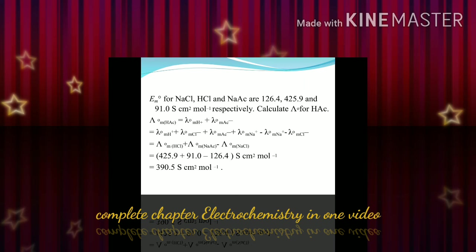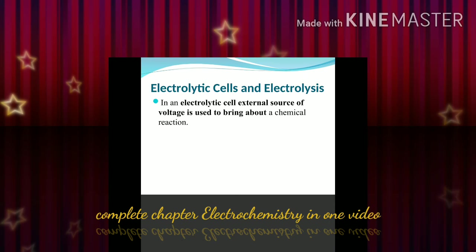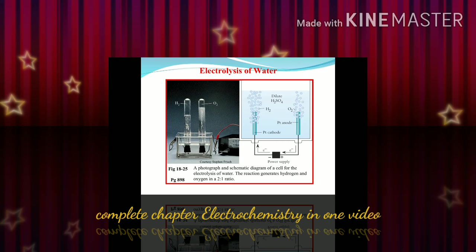An example has been given for NaCl, HCl, and sodium acetate — numericals have been provided. Electrolytic cell and electrolysis: as already mentioned, an external source of voltage is applied. An example of electrolysis of water is given, which results in the formation of hydrogen gas and oxygen gas.